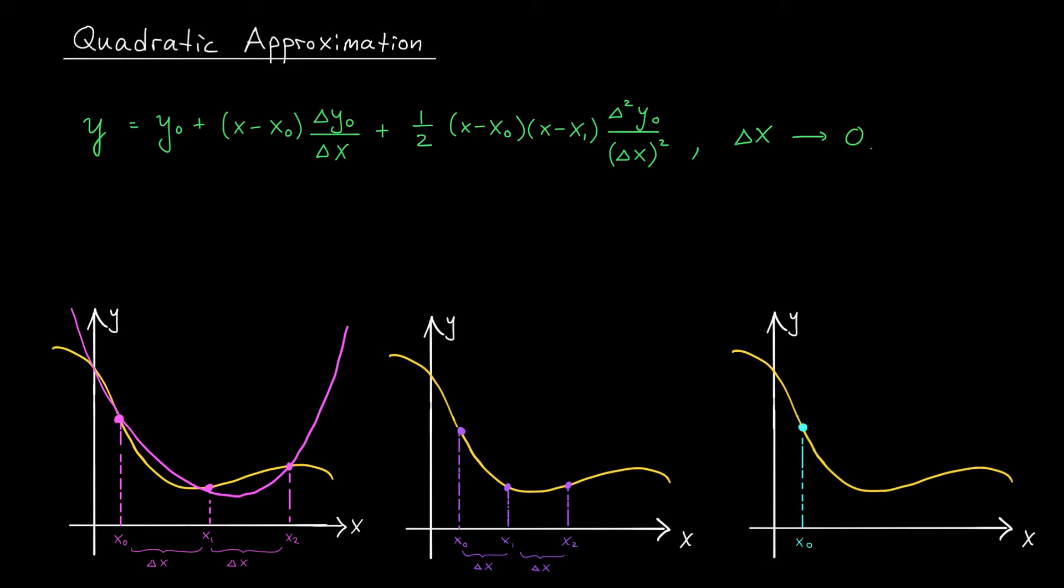Remember from our second example video that in general, we divide our terms by powers of Δx, the distance between points on the x-axis. So now the question becomes, what happens to this approximating parabola as I bring those extra points closer and closer to x_0? That is, what happens as I let my width, Δx, approach zero?